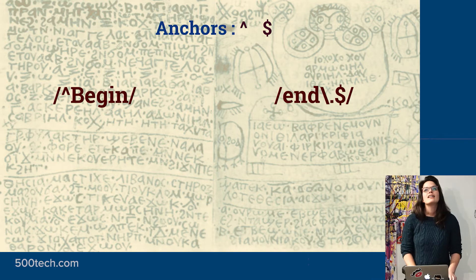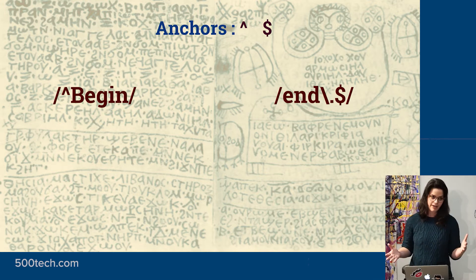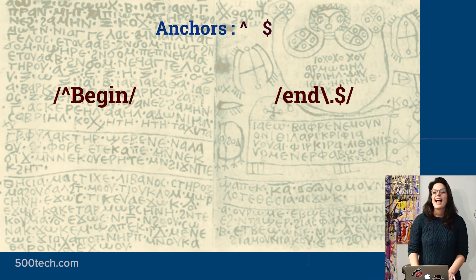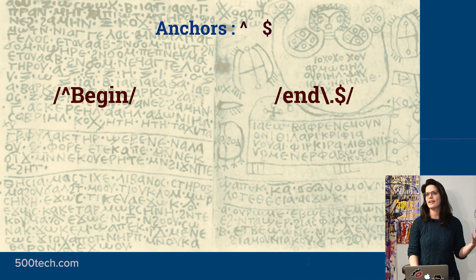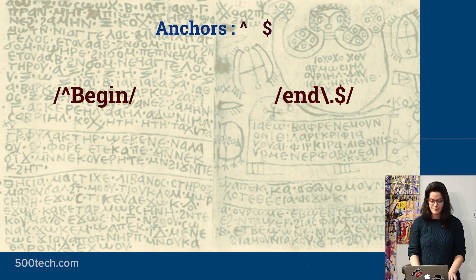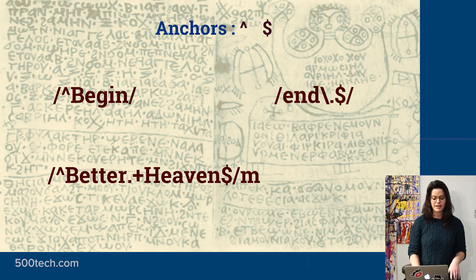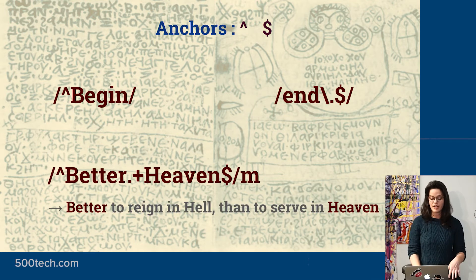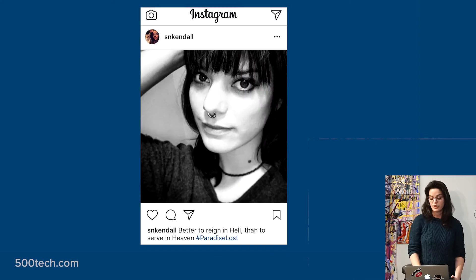Say you took a really great selfie and want to post it to Instagram, but don't want to come across as vain. So you throw song lyrics or a line of poetry underneath it. There's this one line from Paradise Lost — it's an entire book and you don't want to search through it. You know it starts with 'better' and ends with 'heaven', so you throw a pattern with an anchor, the multi-line flag so it anchors at the beginning and ends of lines rather than the entire subject, and it returns: 'Better to reign in hell than to serve in heaven.' And you can post your selfie and not be a douche.